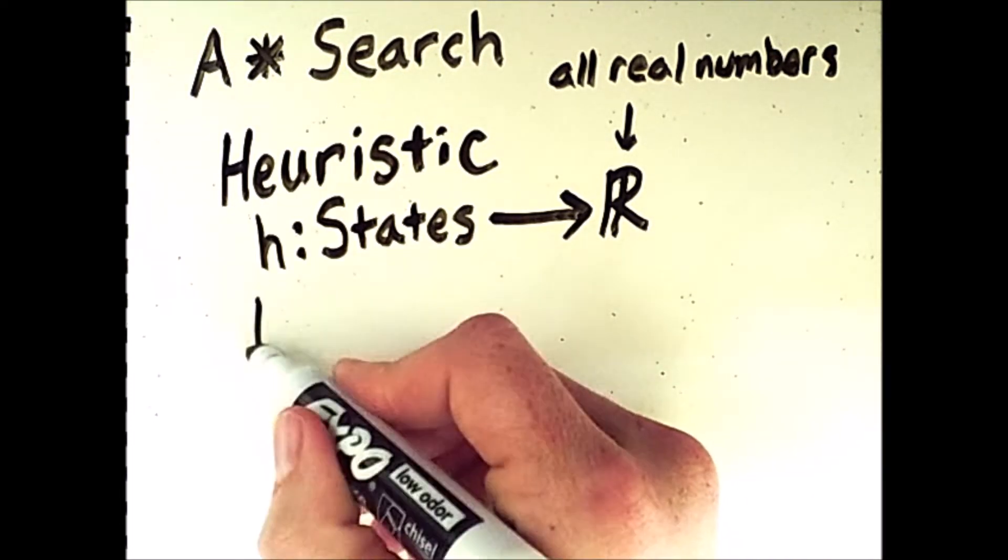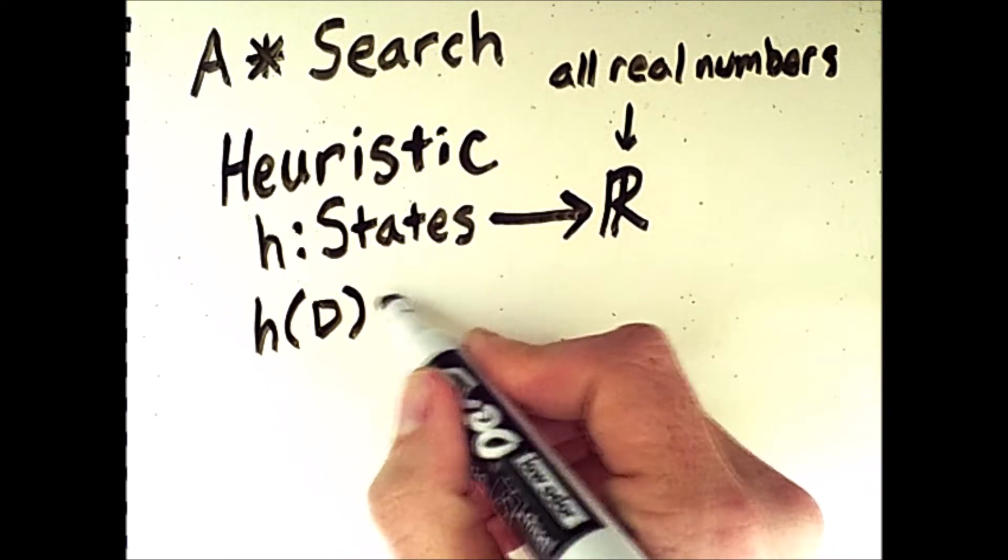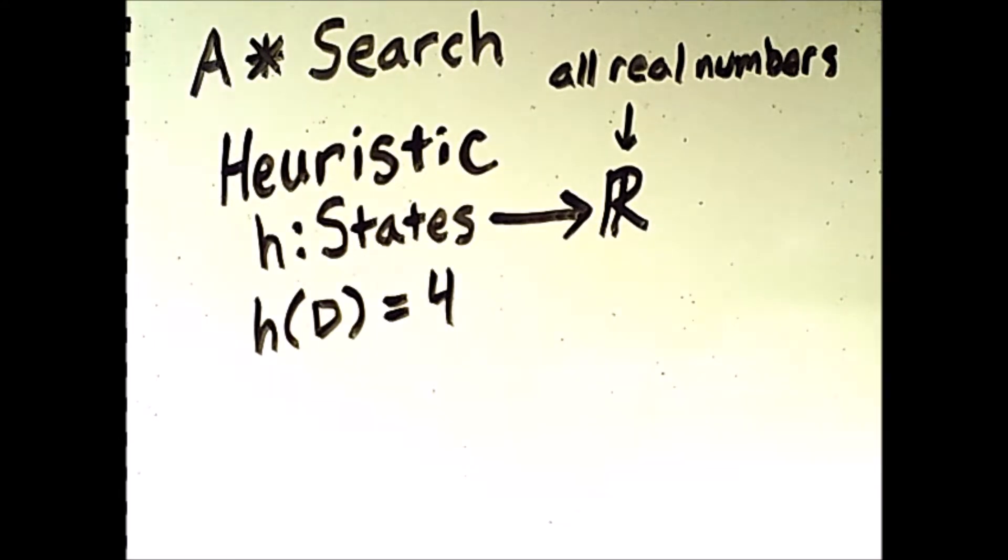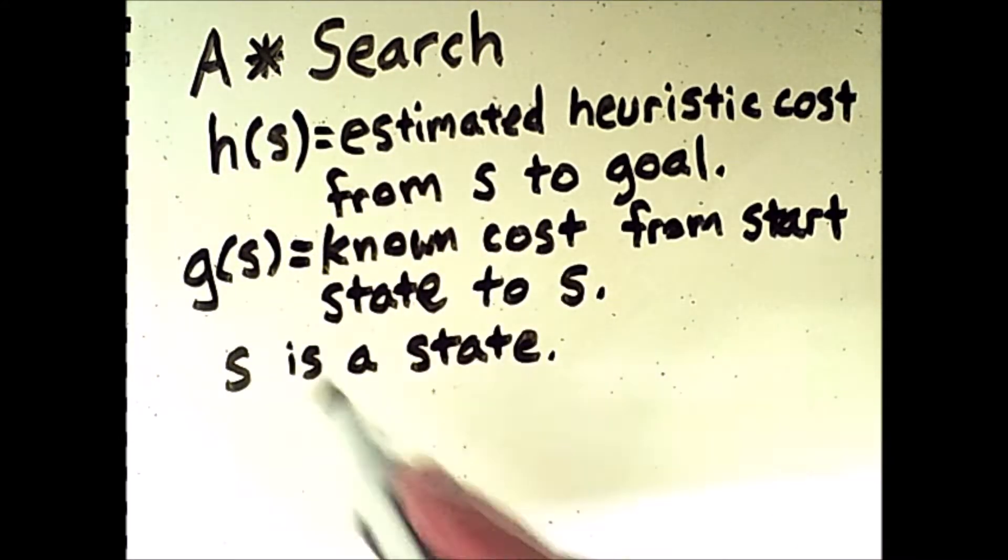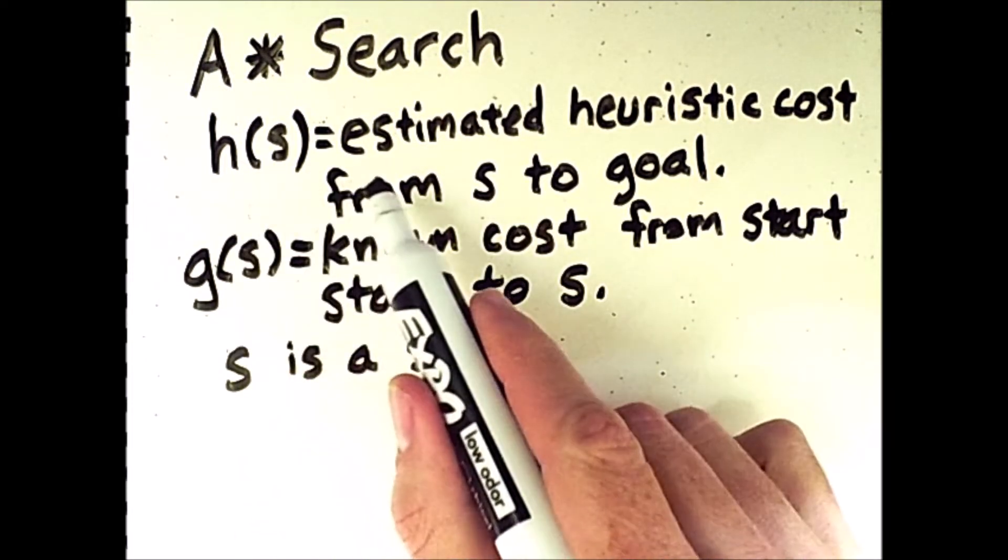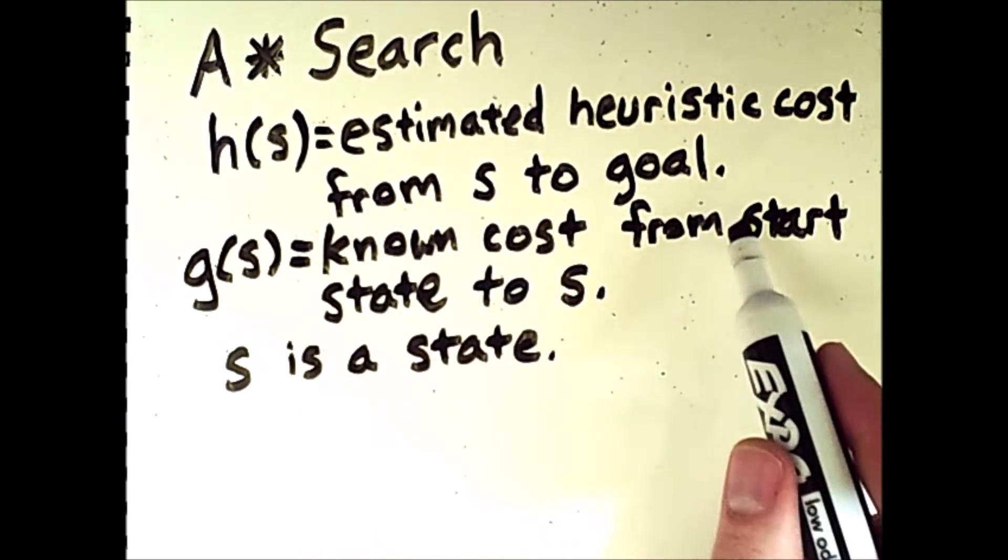If I happen to have a state that was named D, then h of D could return some value like 4. It's just a function that takes a state and returns a number. So we have this function h, which equals the estimated heuristic cost from a state s to the goal state.